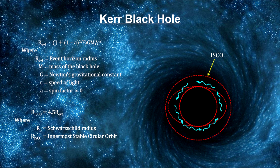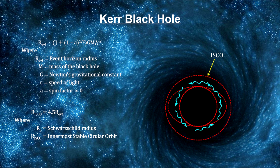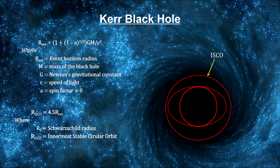Another important boundary is the innermost stable circular orbit, ISCO for short. It's the smallest orbit where a particle can stably orbit the black hole.